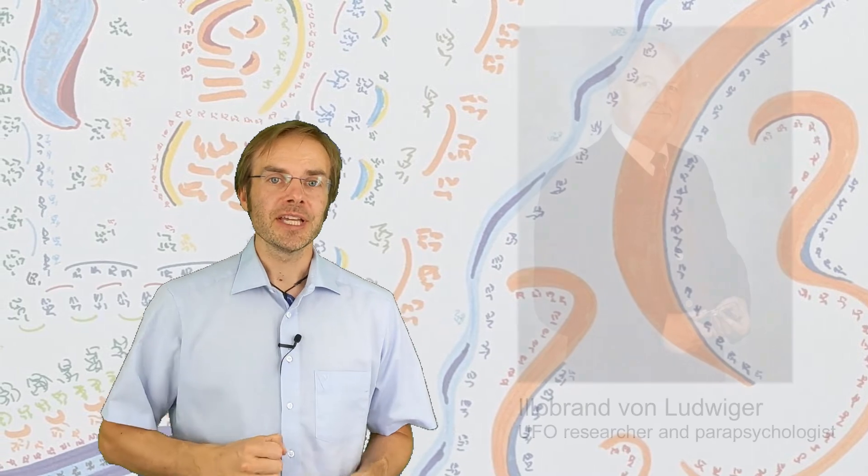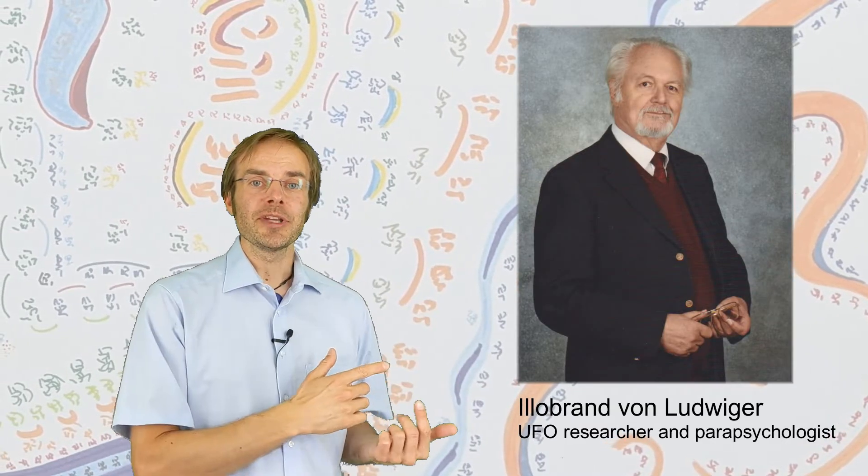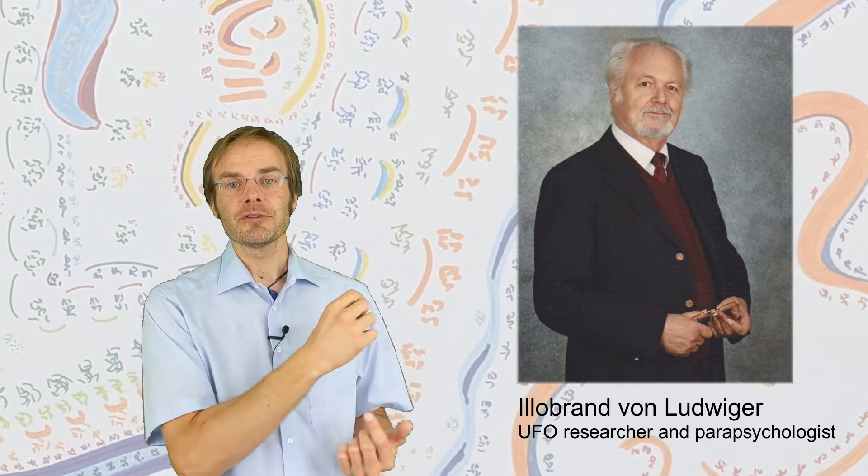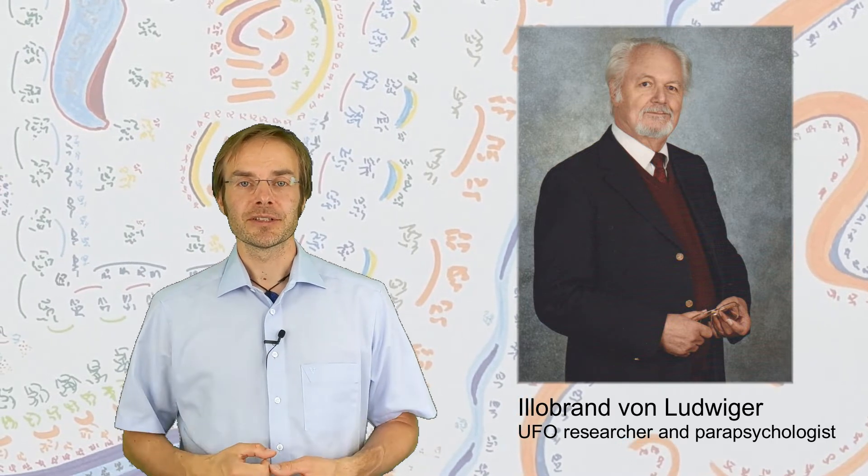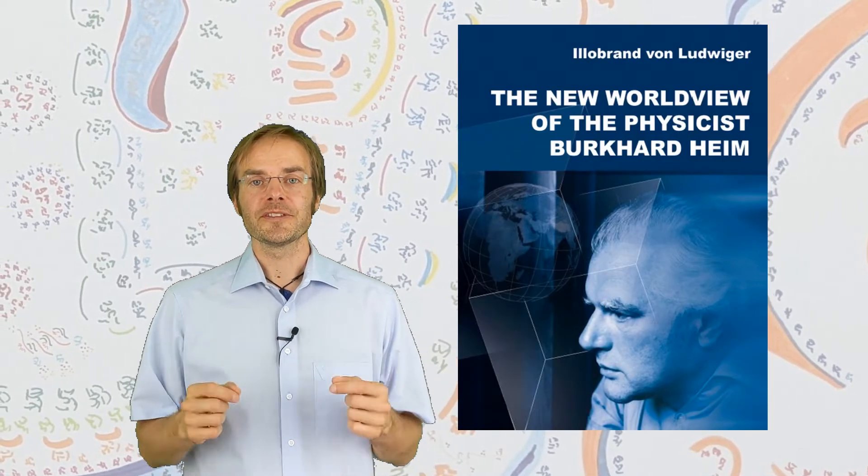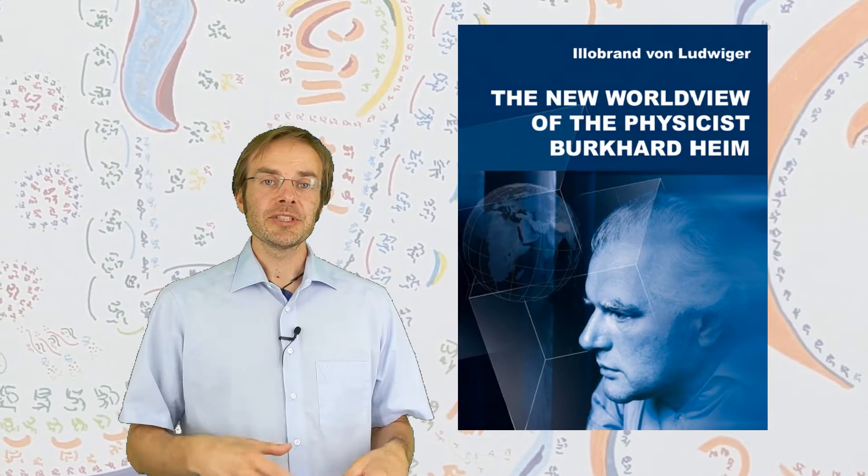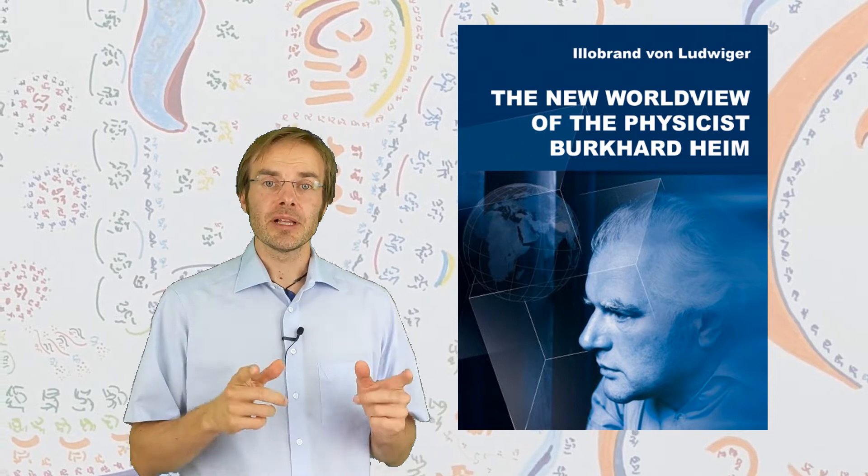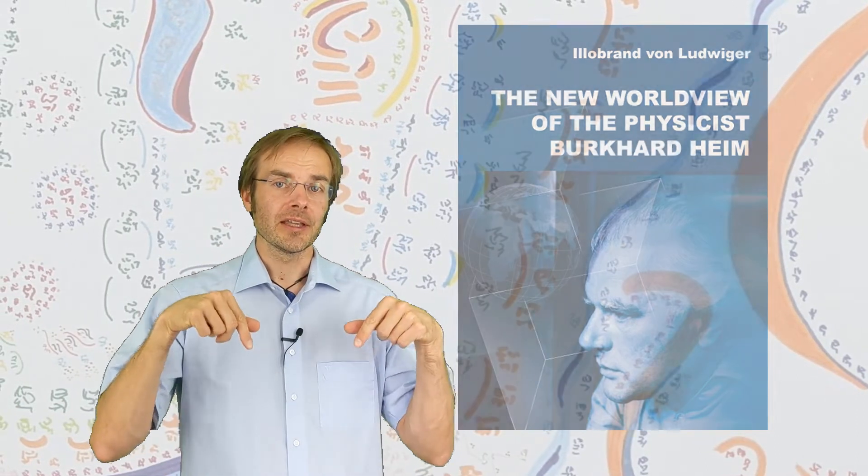A biography has been written in German language by Illobrand von Ludwiger, Germany's most renowned UFO researcher and parapsychologist, who knew Heim for over 40 years and was a close friend of him. In addition to the biography, von Ludwiger has also written many books and articles which refer to Heim's work. One of his books, The New Worldview of the Physicist Burkhard Heim, has also been translated into English and is available as a free download if you check the link in the video description.